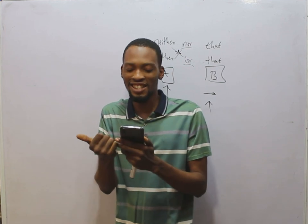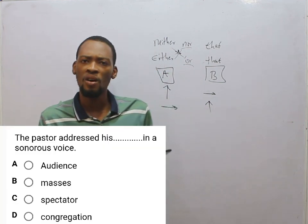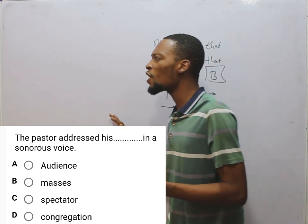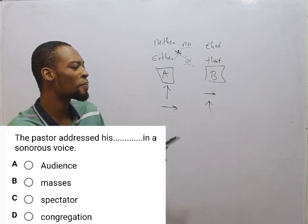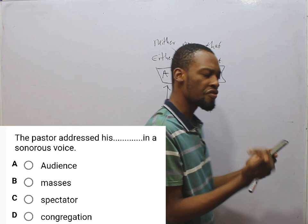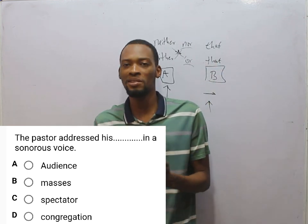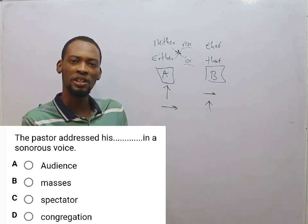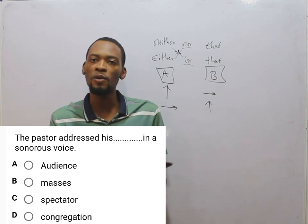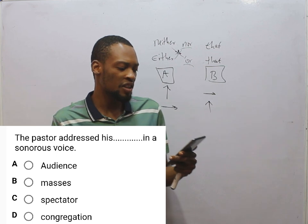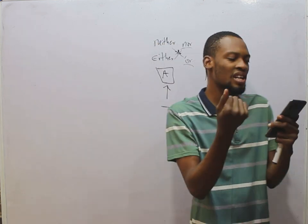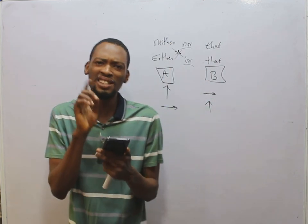The next question: the pastor addressed his dash in a sonorous voice. This tests register associated with a particular subject. Talking about a pastor — who are the persons pastors address? They are simply the members of their church, and members of the church are referred to as congregation. Not spectators — spectators are those who watch sports matches. Not masses — masses is for politicians addressing their people. Audience is for drama or shows. Therefore, congregation is correct: the pastor addressed his congregation in a sonorous voice. Option D is correct.